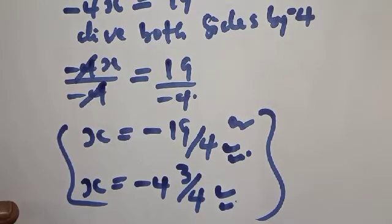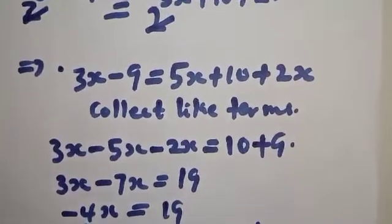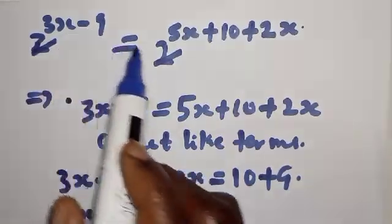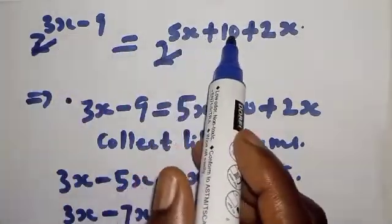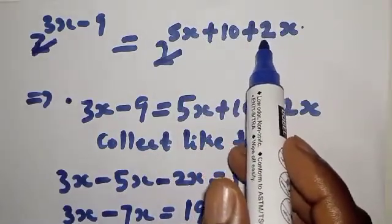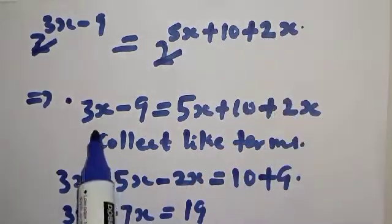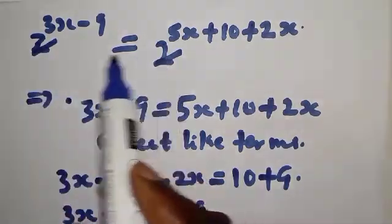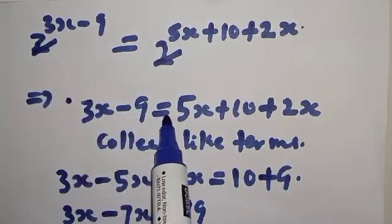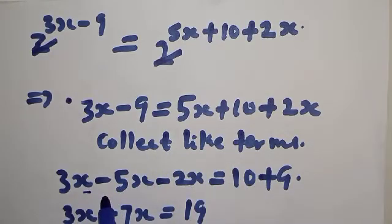You can see that equation has been solved easily. From here we have 2 raised to power 3x minus 9, equal to 2 raised to power 5x plus 10 plus 2x, because this was minus 2x on the denominator. In order to express it this way it becomes plus 2x. Then since we have the same base, the bases cancel, giving us 3x minus 9 equal to 5x plus 10 plus 2x.